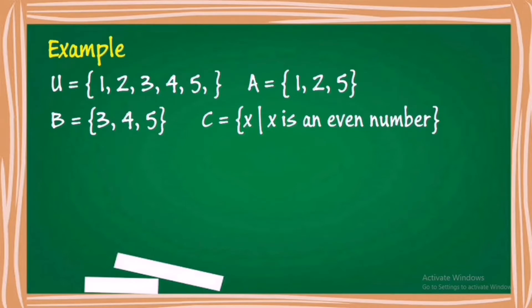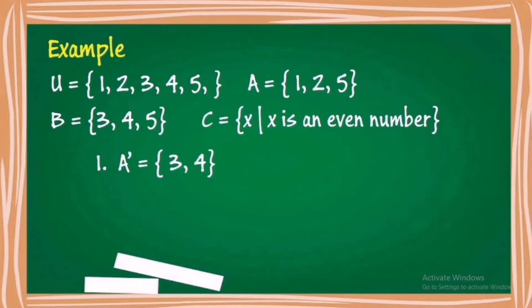Given the following data, let's find out the elements of A complement. A complement must contain elements of the universal set U that are not elements of set A. What are the elements of the complement of A? The elements are 3 and 4.